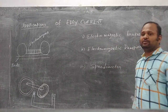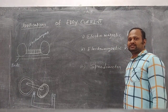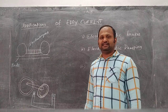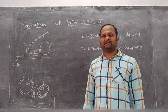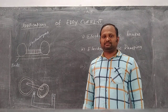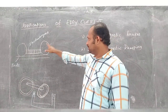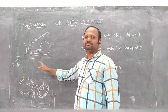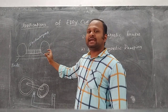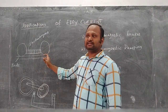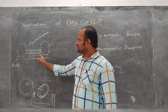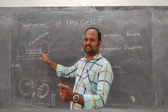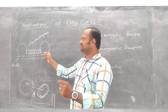First one is electromagnetic brakes. What is the use of eddy currents in electromagnetic brakes? A strong electromagnet is placed just above the rails and is connected with the wheels.